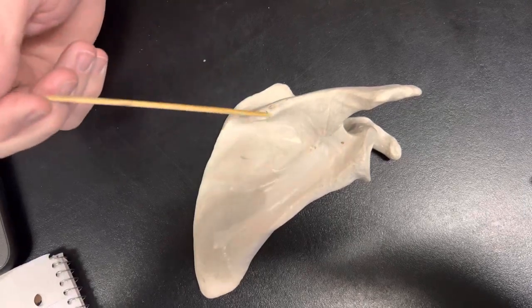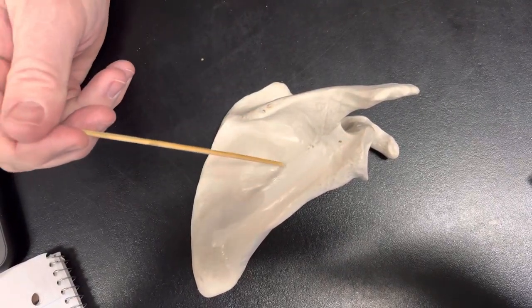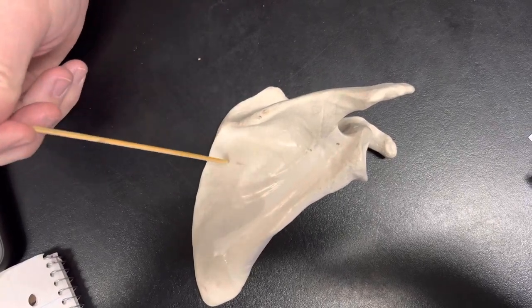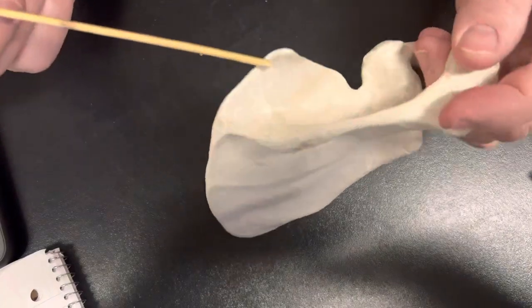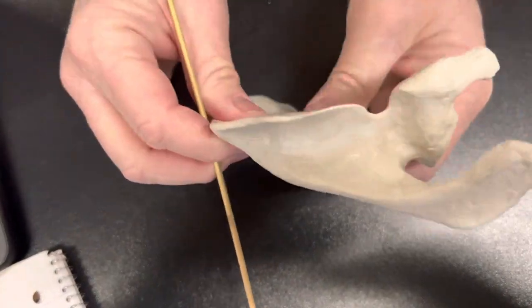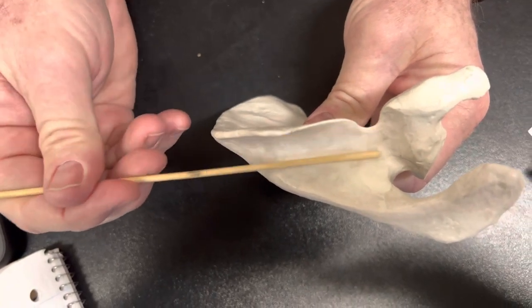If we look at some more of this, below my scapula spine I have this area in here which we're going to call the infraspinous fossa. So that's the infraspinous fossa right there. And then above my scapula spine I'm going to have my supraspinous fossa. So that's my supraspinous fossa right there.